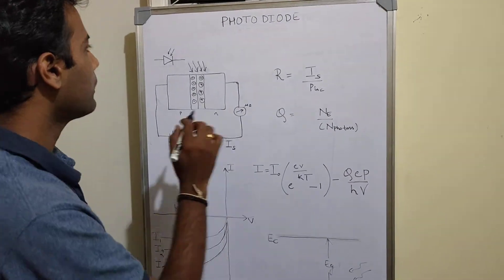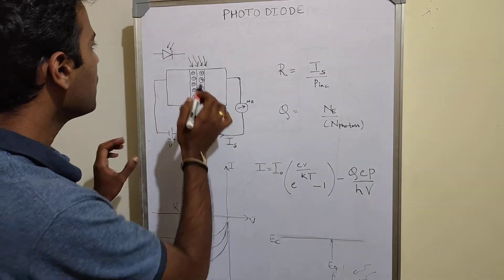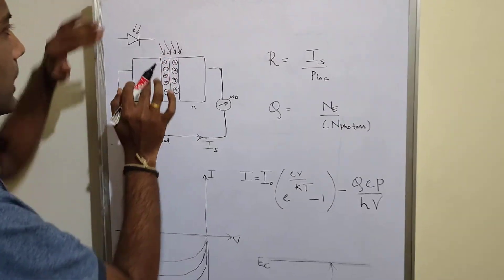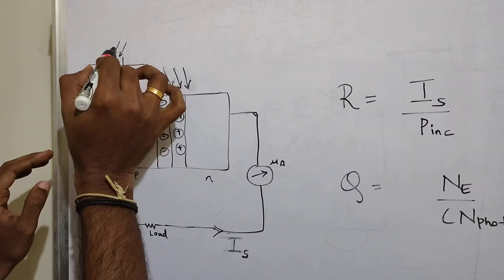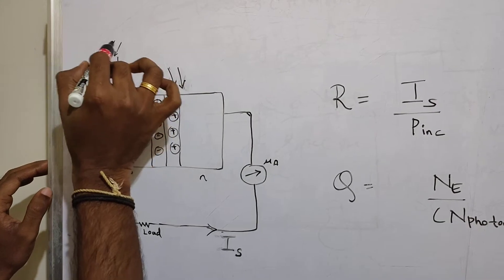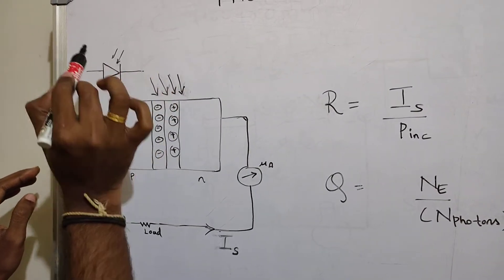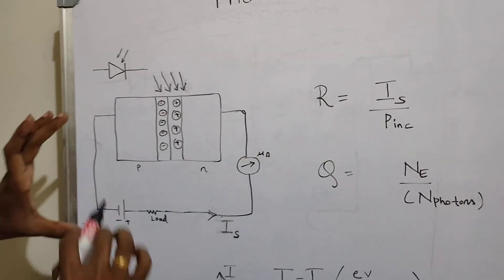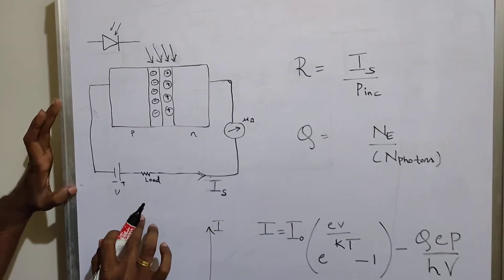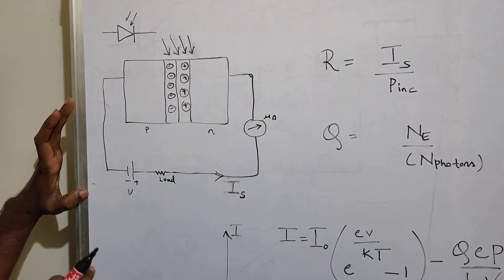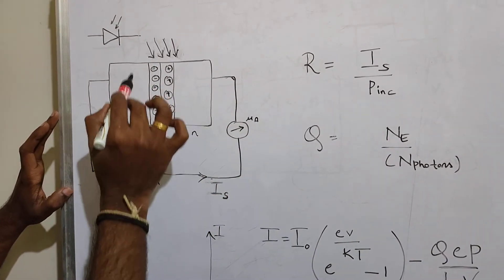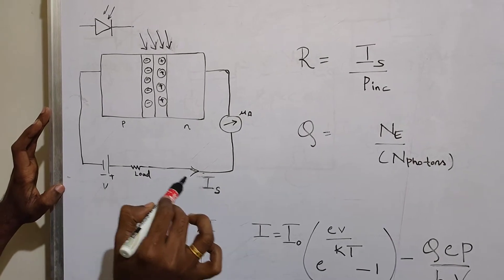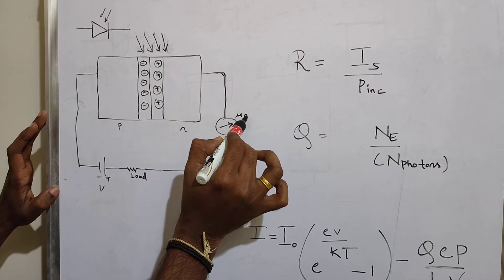This is the symbol of the photodiode. It is the same as a normal PN junction diode but indicated by arrow marks representing the light source or photon incident on the diode. In the circuit, this is the P side, this is the N side, with applied voltage, a load, and IS which is the photo current measured by a micro-ammeter.